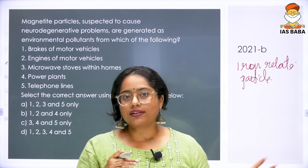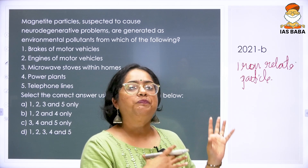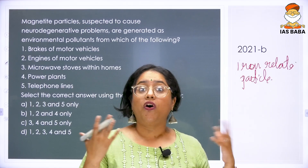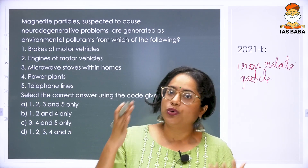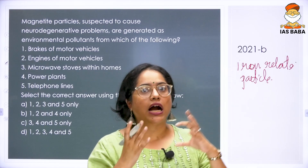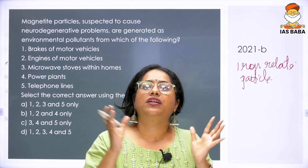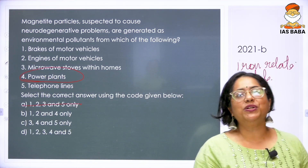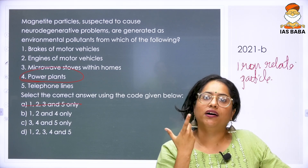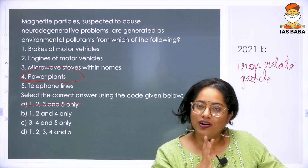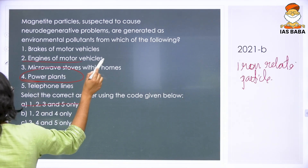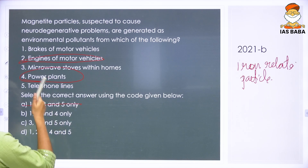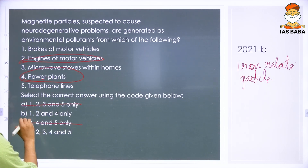Power plants are a sure answer because burning coal and petroleum — which contain iron as an impurity — releases iron oxides into the atmosphere, so option 4 must be in the answer. Looking at the options with 4, we then consider engines of motor vehicles: burning coal and petroleum in engines also releases magnetite. So option 2 is also correct. We need an option containing both 2 and 4, which leads us to 1, 2, and 4.